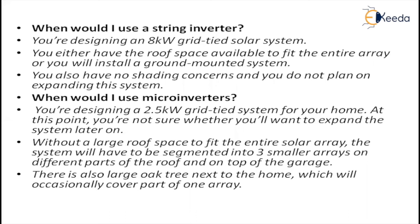Microinverters are used from a 2.5 kilowatt grid-tie system for your home — for instance, when you are not sure whether you want to expand the system later on, without large roof space to fit an entire solar array, with the array segmented into 3 solar sections on different parts of the roof, or where there is a large tree nearby that will occasionally shade part of one array. Wherever there are shading effects and such issues, and you want to expand your system, you can install a microinverter-based PV panel system. But where there is no expansion needed and no shading effects, you can use string inverter systems.